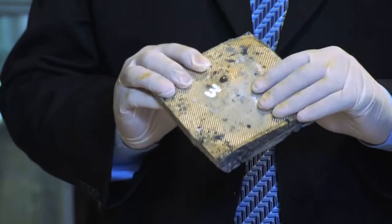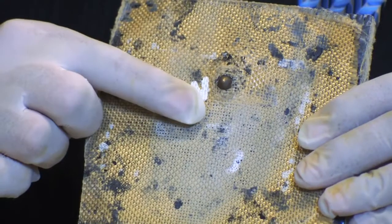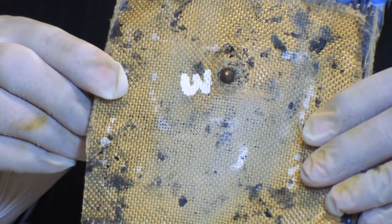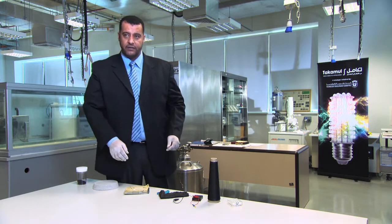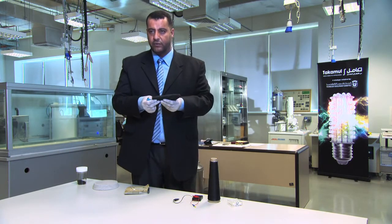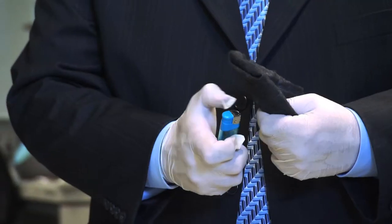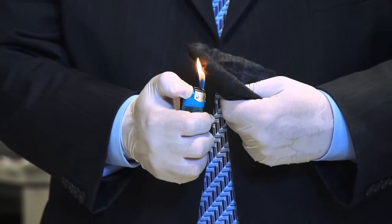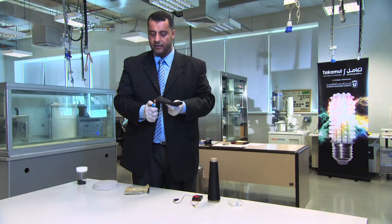Another application is for bulletproof vests. You can see the bullet did not penetrate. The third application is as a fire retardant. This piece of cloth is mixed with carbon nanotubes, making it fire retardant. When I light it, it doesn't ignite.